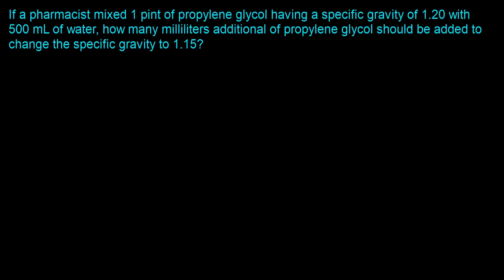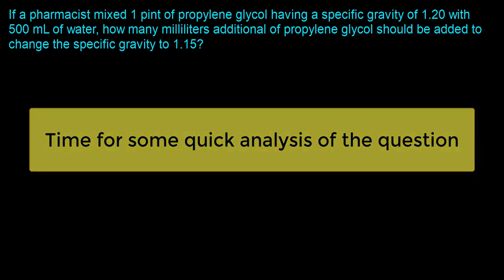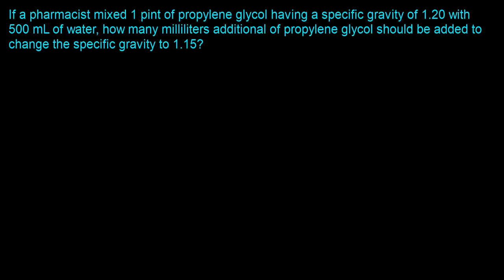This question says: if a pharmacist mixed one pint of propylene glycol having a specific gravity of 1.2 with 500 milliliters of water, how many milliliters additional of propylene glycol should be added to change the specific gravity to 1.15? Here we want to mix two components — propylene glycol and water — which have different specific gravities, and end up with a mixture that has a specific gravity of 1.15.